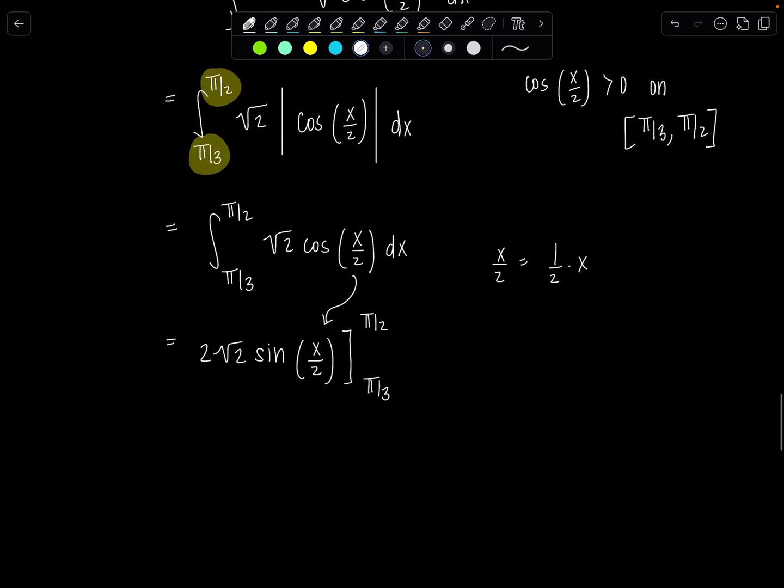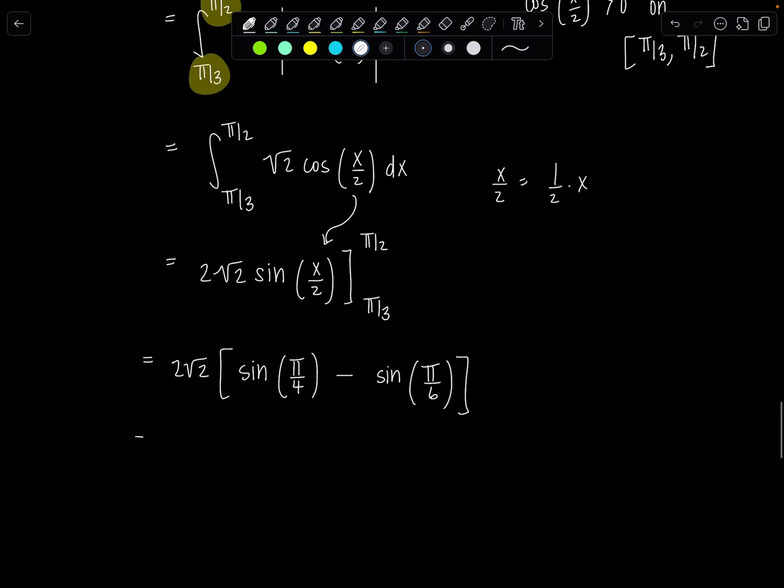Very good. Leave the 2√2 outside. And then you have sin(π/2 divided by 2), that would be π/4, minus sin(π/3 divided by 2) which is π/6. All right.